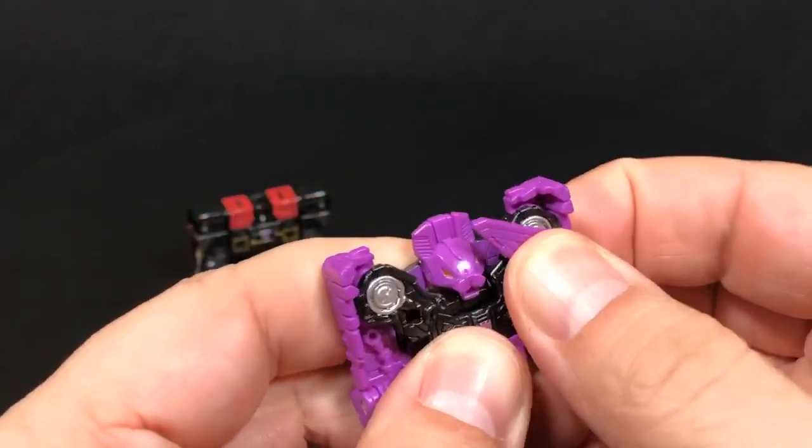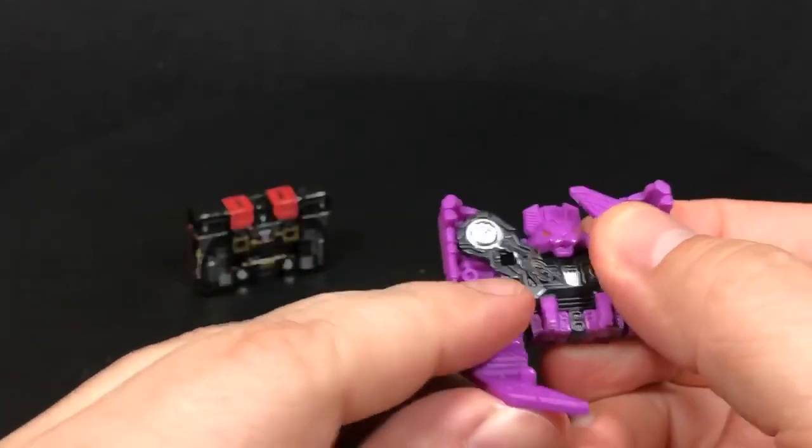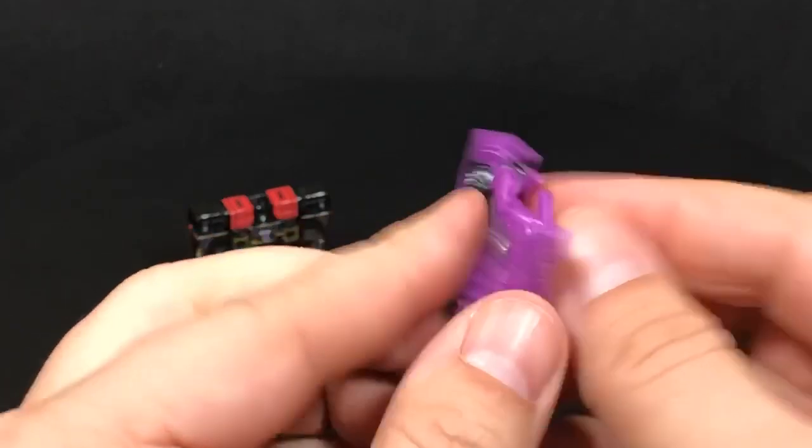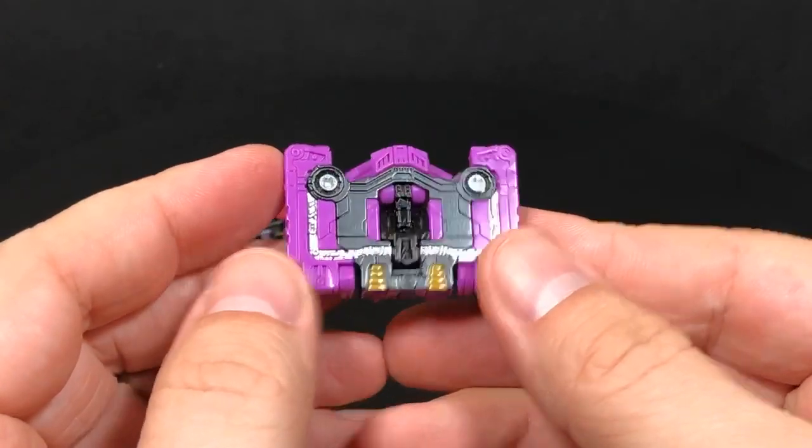Then you just bring up the wing tips and you'll see that there's a tab right there that tabs into right there. Do that again for this side, and there you go - Rat Bat in his cassette form.